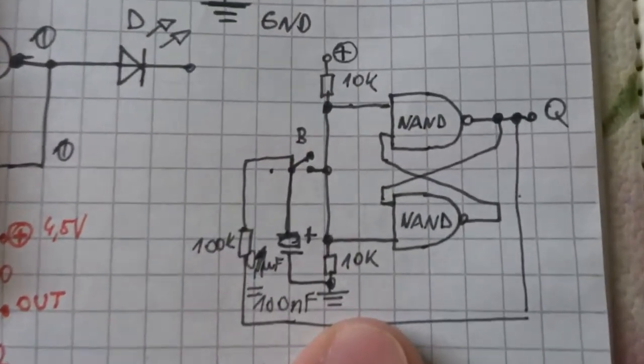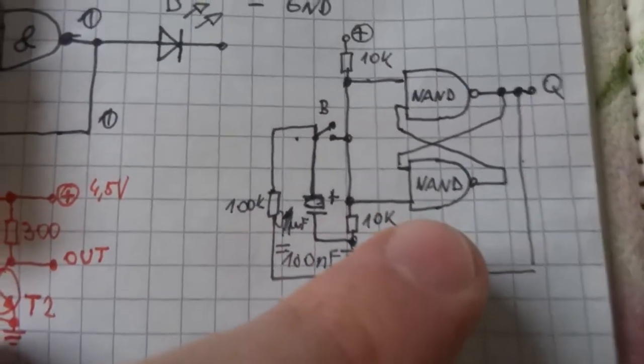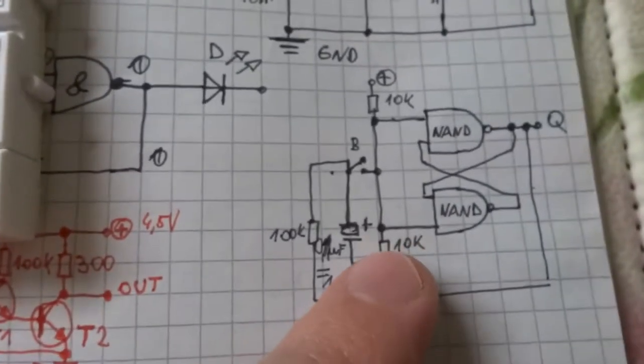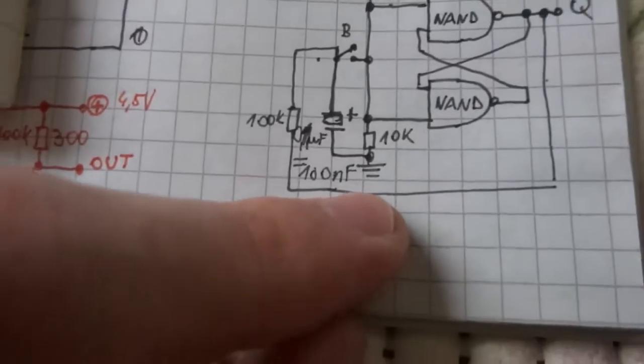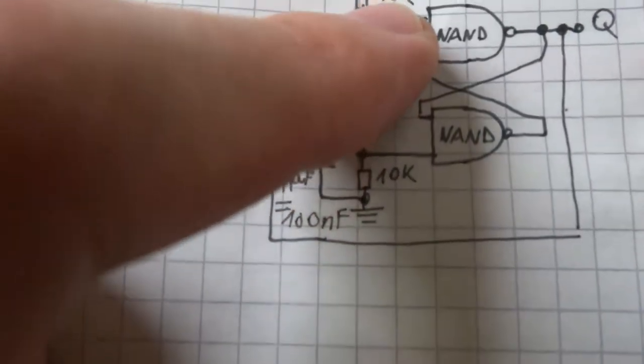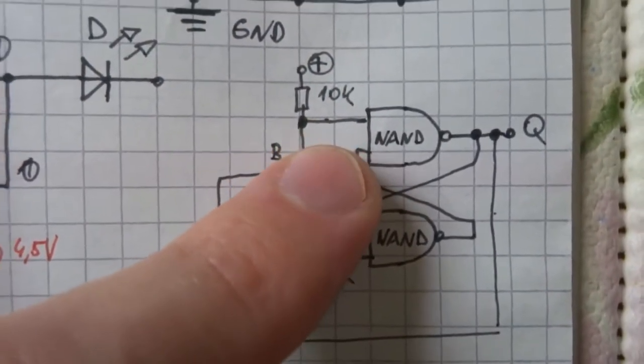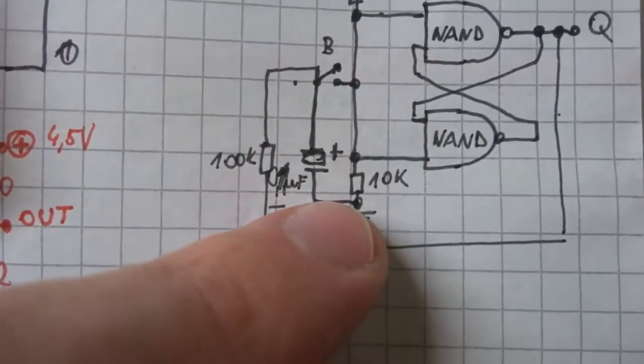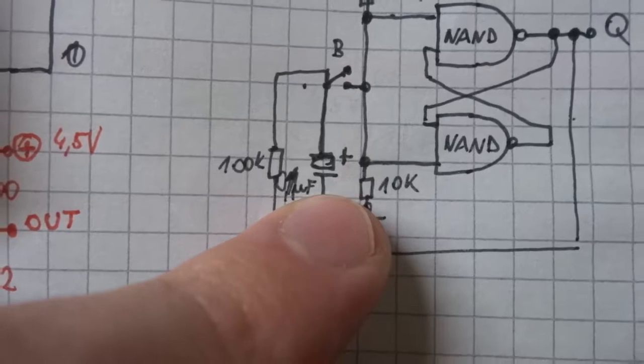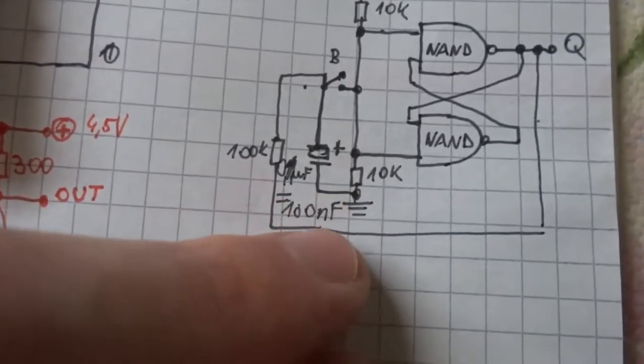With NAND gates I will begin. Here is 100kΩ, this button, this is 0.01μF.